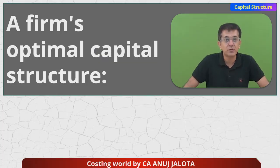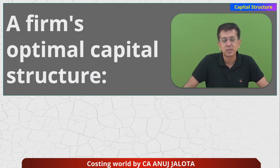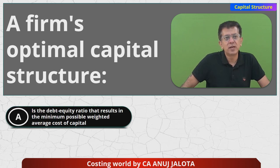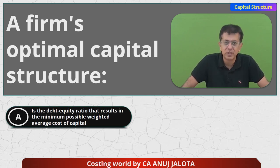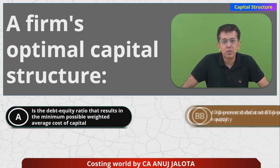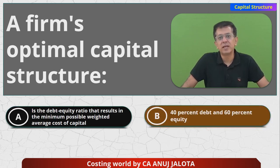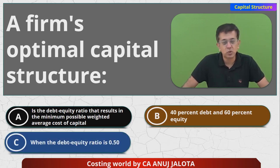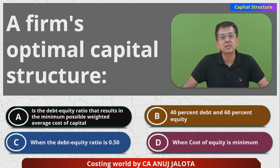Our question for today is from capital structure. The firm's optimal capital structure is — first option: is the debt equity ratio that results in minimum possible weighted average cost of capital? Second one: 40% debt and 60% equity. Third: when debt equity ratio is 50-50, and lastly: when cost of equity is minimum?